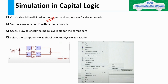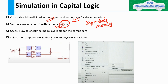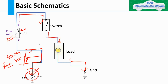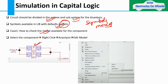For the process, one particular circuit should be divided into system and subsystem for analysis. System and subsystem symbols are available in the library with default mode models. There are two things: symbols in the library and models. We will check whether a particular symbol has an associated model. For example, suppose this is my headlamp as a load — I want to check whether this component has a model associated or not.